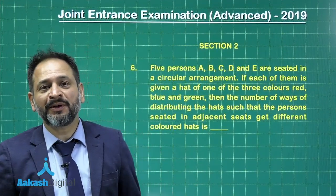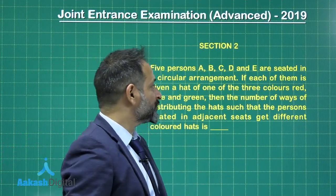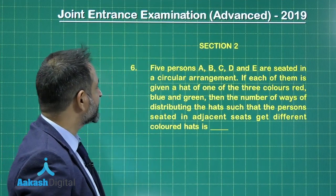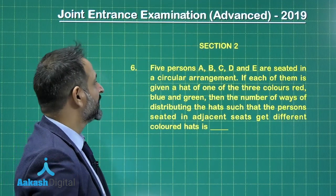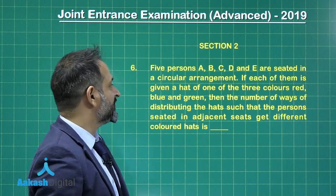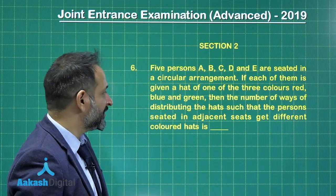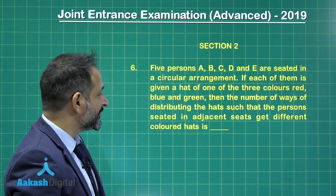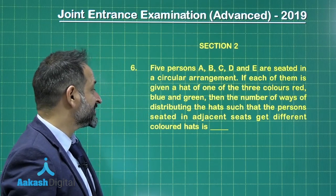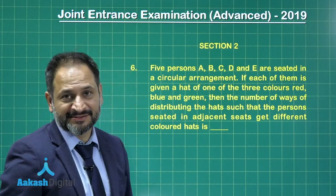Finally, a problem for the permutation levers. So here is the problem related to the circular permutation. It is given that a, b, c, d and e are seated in a circular arrangement. If each of them is given a hat of one of the three colors, red, blue and green, then the number of ways of distributing the hat such that the person seated in adjacent seats get different colored hats.